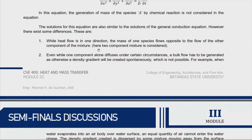Let's discuss the differences from heat conduction. Based on Fick's law, while heat flows in one direction, the mass of one species flows opposite to the flow of the other component — a two-component mixture is considered. In heat transfer, flow is just one direction from high to low temperature, but in diffusion the species tend to flow opposite to each other as they try to reach equilibrium.